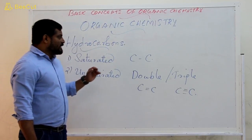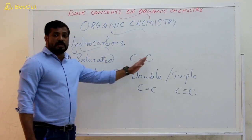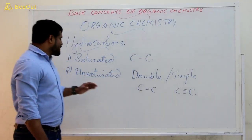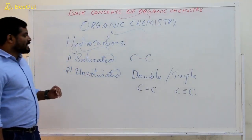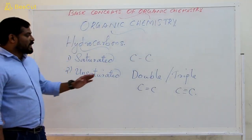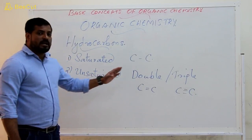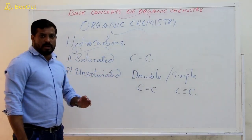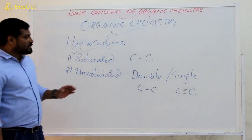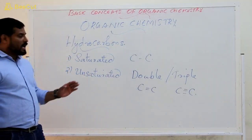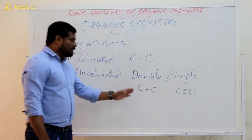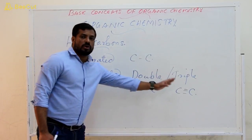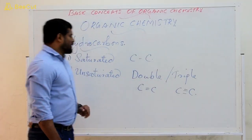Saturated means carbon-carbon single bond exists, and unsaturated means carbon-carbon multiple bond exists. This multiple bond is either a double bond or a triple bond.